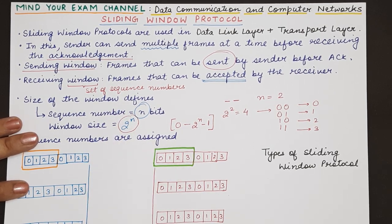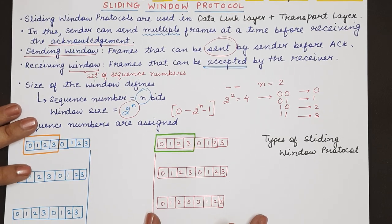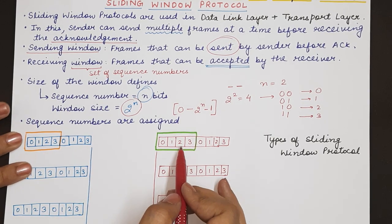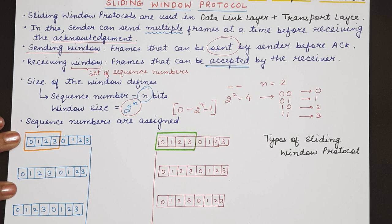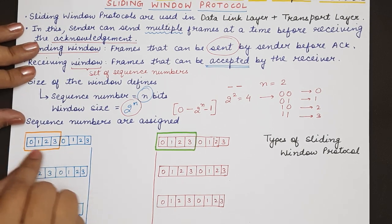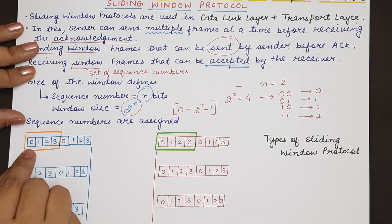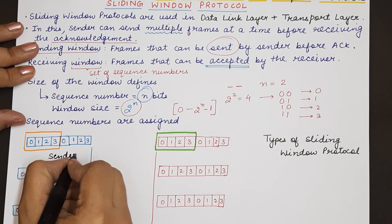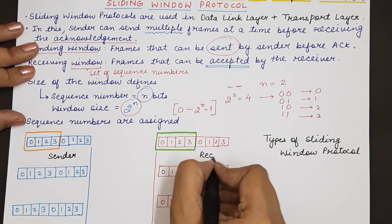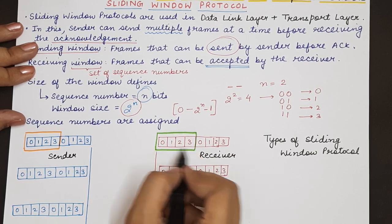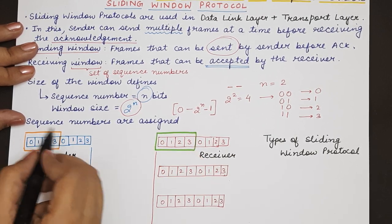Let's take an example of how the sliding window protocol actually works. We have a sender and a receiver, and at both ends the size of the window is 4. That means the maximum window length is 4, so those frame numbers can be sent by the sender. The receiver can also receive the frames which are present in its receiving window.